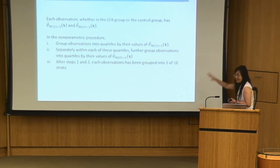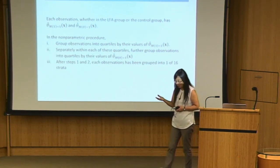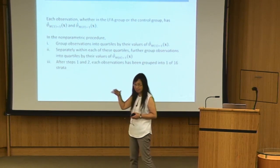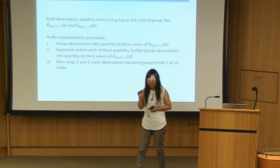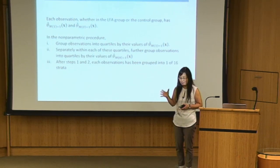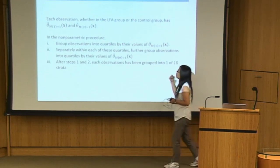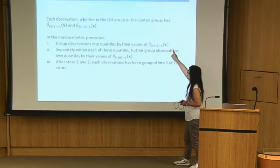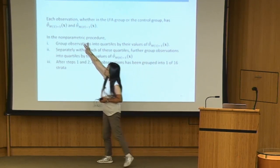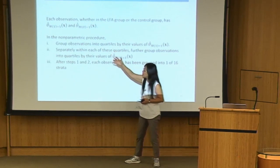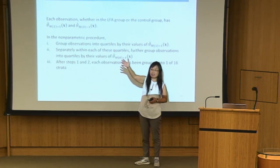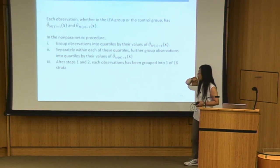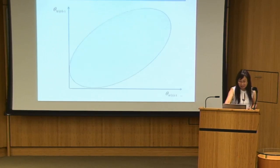Now we look at the non-parametric alternative. The downside of the parametric approach is that we still had to specify propensity score models, which could be misspecified. This motivates a non-parametric solution. After estimating propensity scores, instead of using them directly, we stratify on one propensity score, then sub-stratify on the second propensity score, creating a grid of cells. Within each cell, we re-estimate propensity scores non-parametrically.